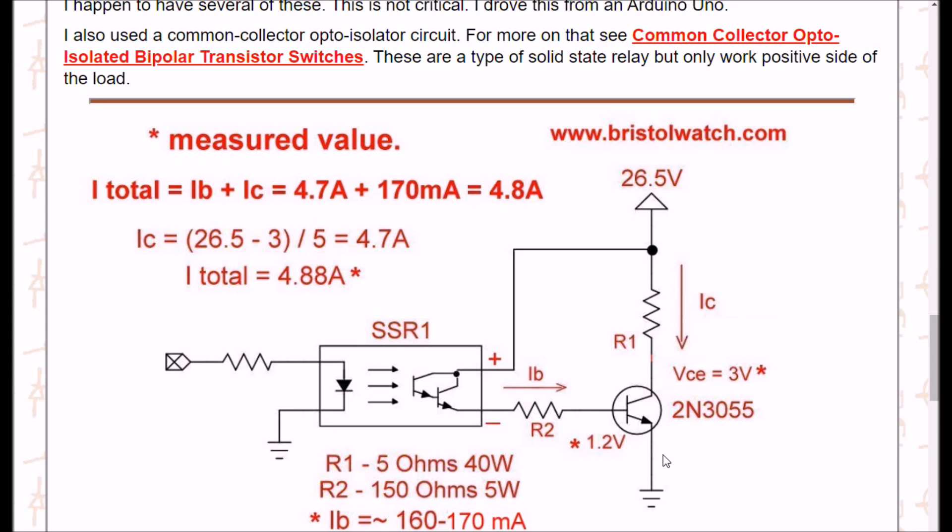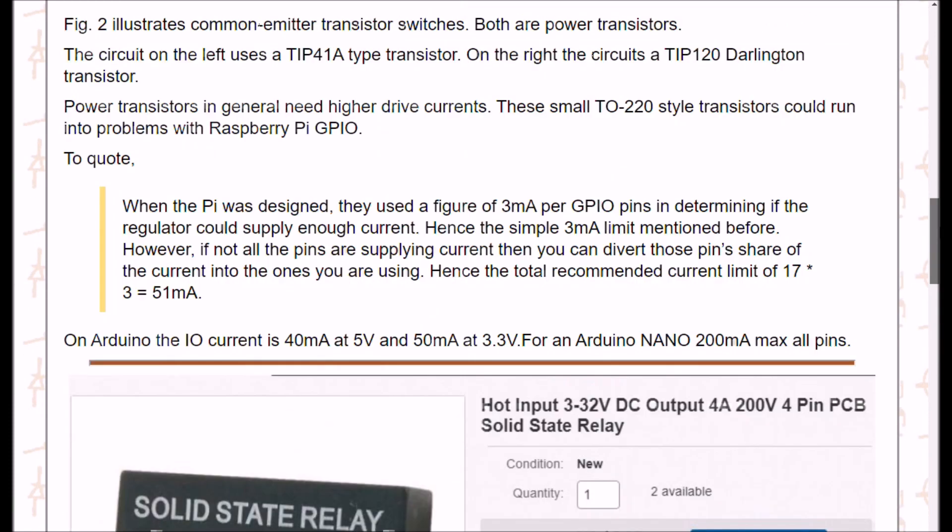So to get the current through R1 and the voltage drop, I have to subtract 3 volts from 26.5. As you see here, 26.5 minus 3 divided by 5 ohms is 4.7 amps. My total current, as measured by that little module there, was 4.8 amps.